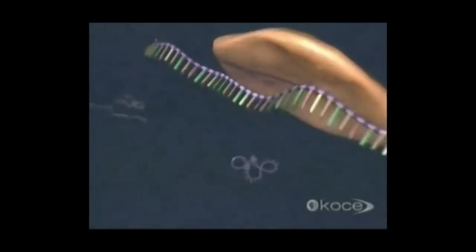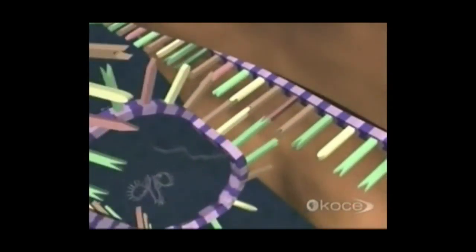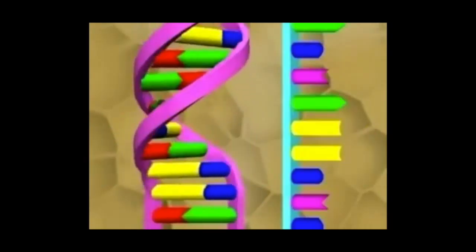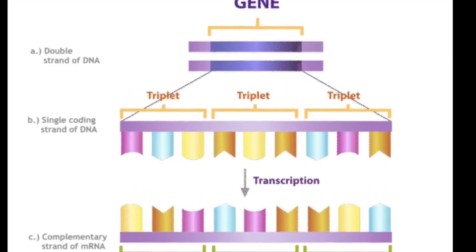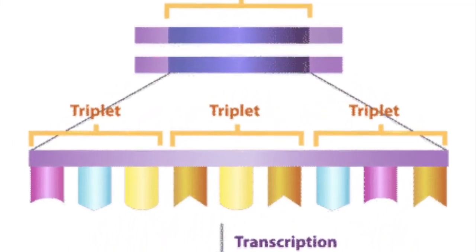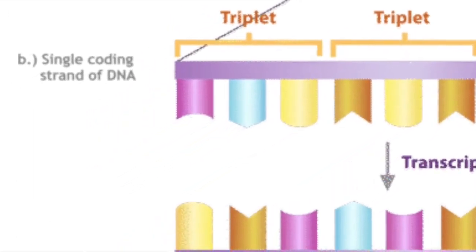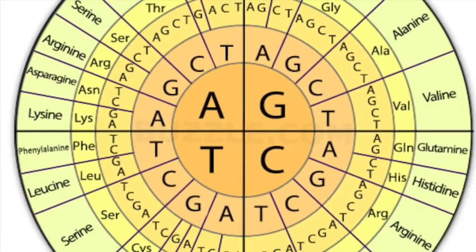As not all genes are used in every cell, a gene must be turned on or expressed when a gene product is needed by the cell. The information in a gene that is being expressed is transcribed into mRNA. Each gene contains triplets of bases that are transcribed into RNA, and every triplet in the DNA, or codon in the mRNA, encodes for a unique amino acid.